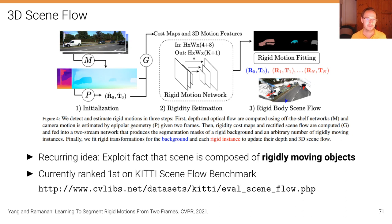And we can exploit that fact, we can integrate that into our algorithm and get more robust estimates of the scene flow that way. So in this particular case, this is a paper from Yang and Ramanan called Learning to Segment Rigid Motions from Two Frames.